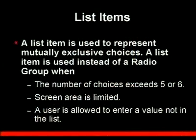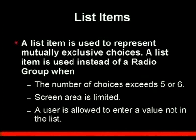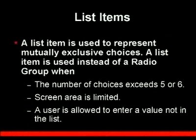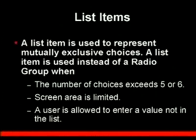Now we have list items. A list item is used to represent mutually exclusive choices and is used instead of a radio group when there are more choices — generally when the choices exceed five or six. Or it could be because the screen real estate is limited, so it could also be a list item for just a few choices. One type of list item allows a user to enter a value which is not in the list.